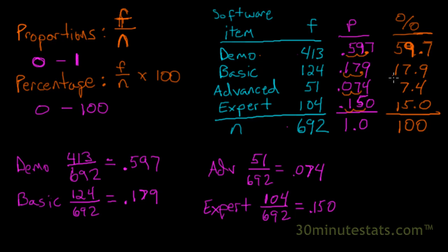But when it comes to sales, we can see that the advanced version of our software doesn't sell quite as much. Less than 10% of the units sold were the advanced version, 7.4%. The basic and expert units made up 17.9% and 15% of the units sold, respectively.